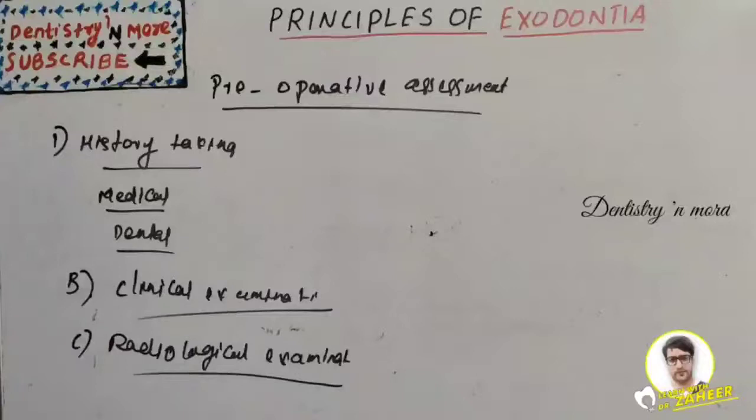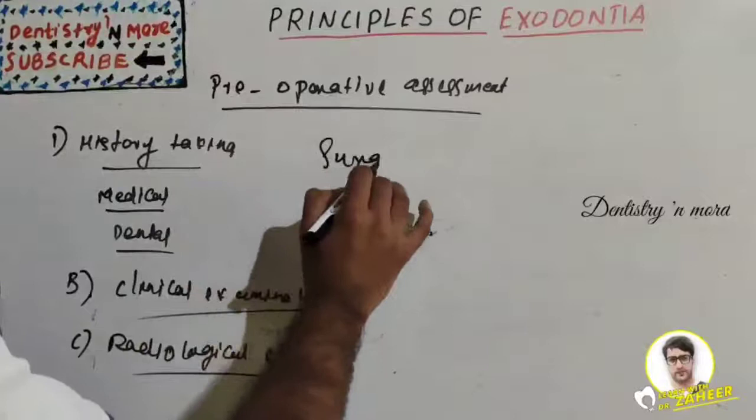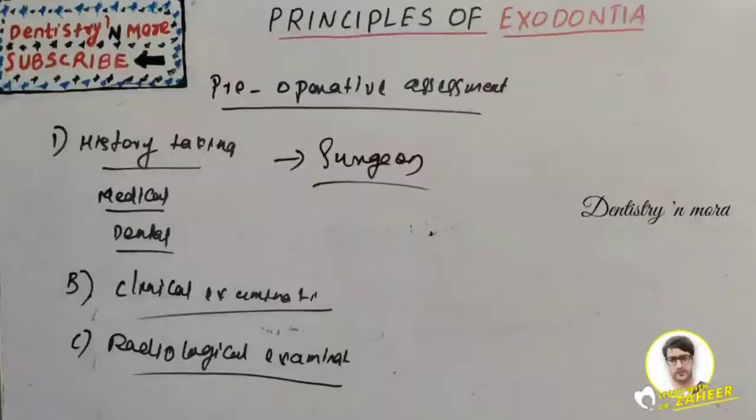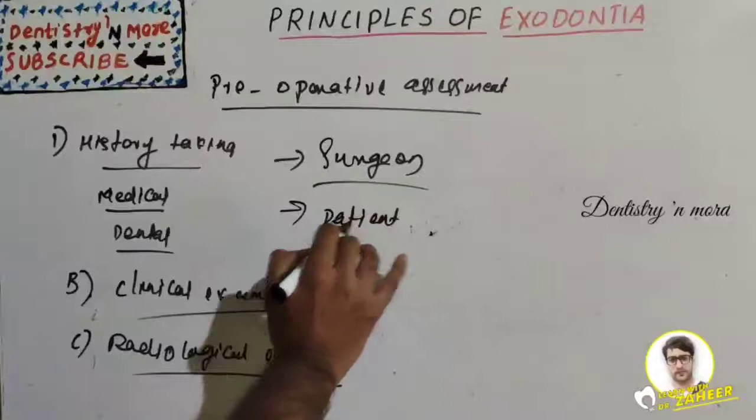After radiological examination, the surgeon should be prepared for extraction. The surgeon needs to wear hand gloves, mask, eyewear with shield, and a surgical gown, and ensure sterilization of all materials. Meanwhile, the patient also needs to be made ready.